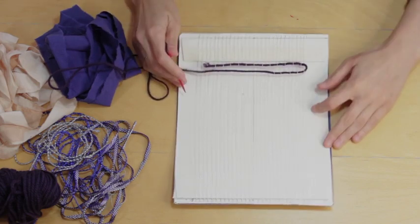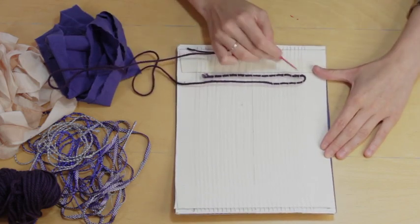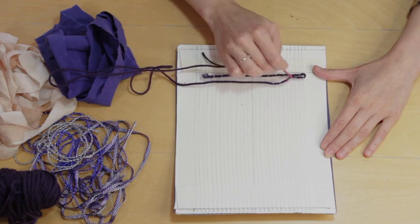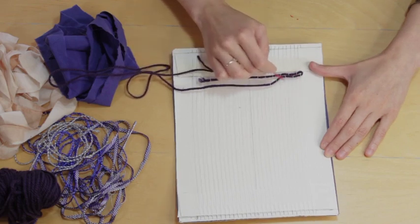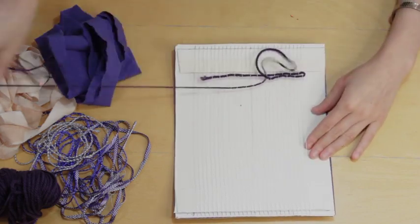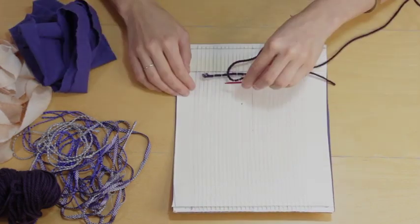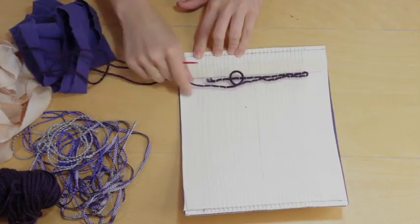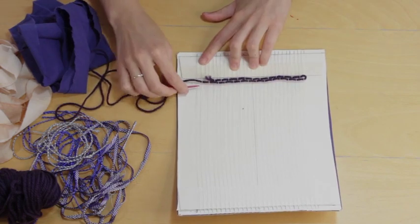So now once you're starting to get a couple of rows, you can push them down next to one another like this. And we're just going to carry on and we're going to build up about four rows of this plain weave, and then I will show you how to do the tassels.